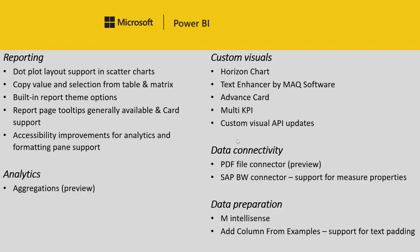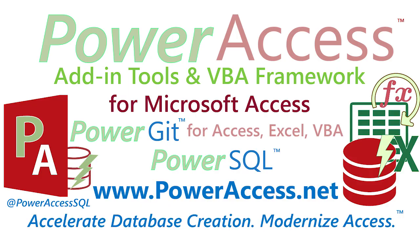You can now do text padding through the Add Column from Examples feature, and of course you can mix that with all the other great transformations we support, so you can mix and match them all in one new column. That's it for this month — let us know in the comments what you think of these features and what you'd like to see us add next. Thank you.